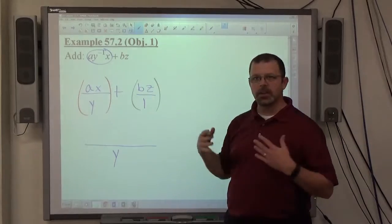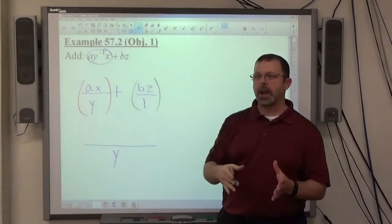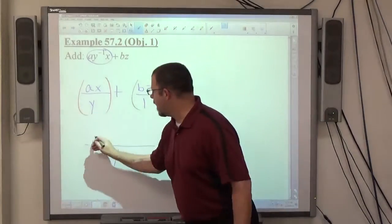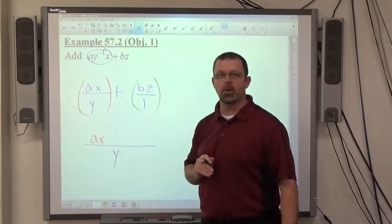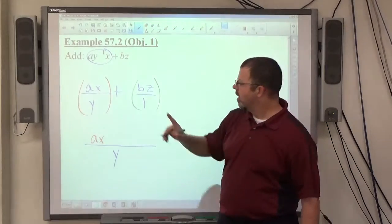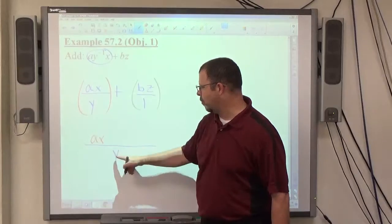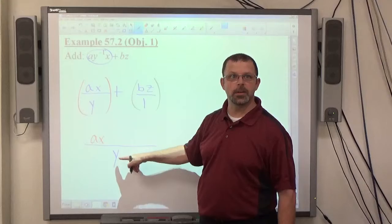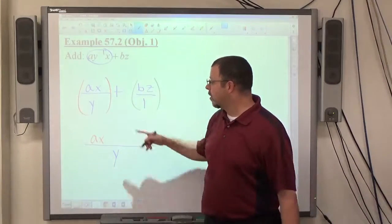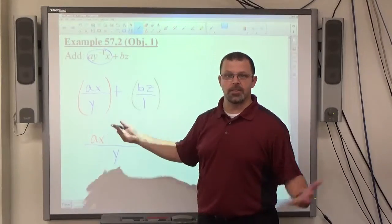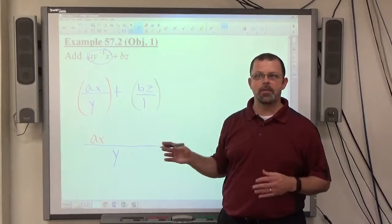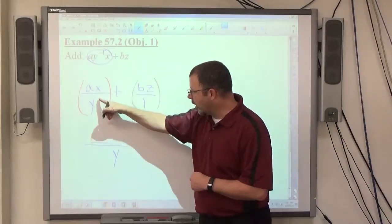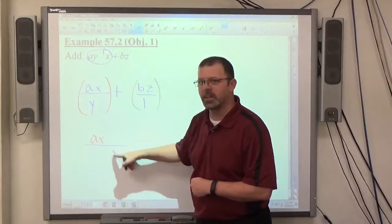Again, every time I look at this, I have to look at what I have, what I want to have, and how did it change. So A, X is what the top was before we did anything. The denominator was Y and it became Y. How did it change? It was Y and it stayed Y, so it didn't change. So that means that I don't do anything to A, X. It just stays A, X. No common denominator change, so this is what it was, this is what it still is.